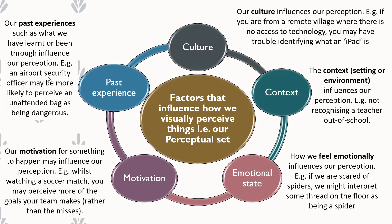Past experience also explains why an airport security guard will immediately notice an unattended bag in a terminal, while a regular traveller might walk right past it. The guard's training and background direct their visual attention differently. So these factors — culture, context, emotional state, motivation, and past experiences — all influence how you visually perceive objects, situations, and events.